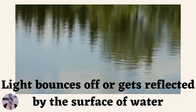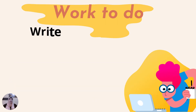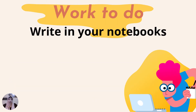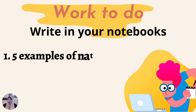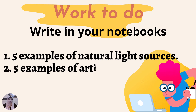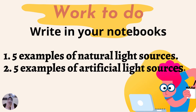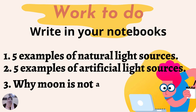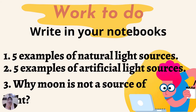Your work for today: write in your notebooks five examples of natural light sources and five examples of artificial light sources that are man-made. You also have to answer why the moon is not a source of light — it is producing light and we see it shining at night, so why is it not a source of light?